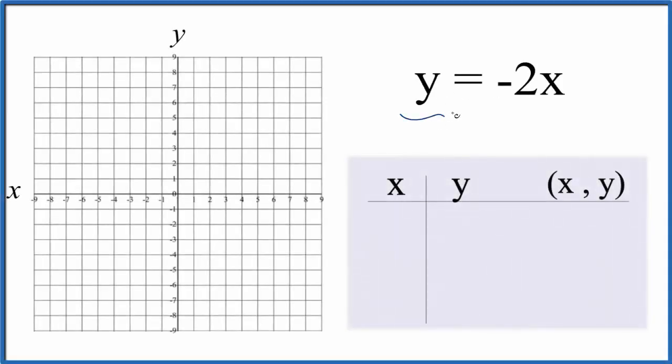Let's graph the linear equation y equals minus 2x and we're going to do it two ways. First we'll put values in for x and that'll give us the value for y. Then we can take those points and graph them. Next we'll look at the slope intercept formula to check our work.